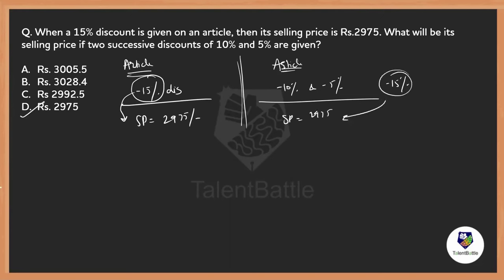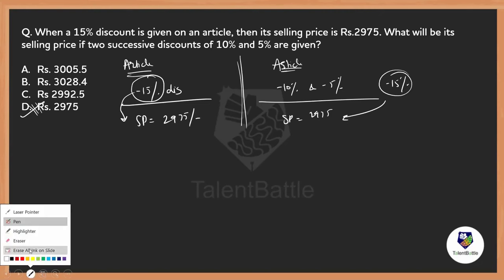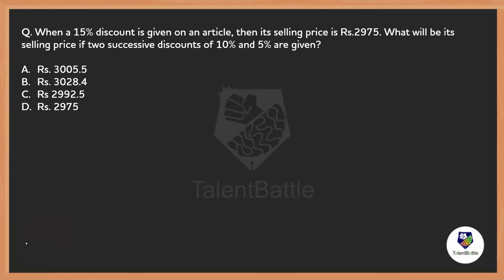Most people would pick option B — 2975 — and that is the wrong answer. Successive discounts are completely different from individual discounts.